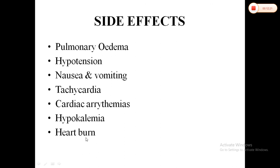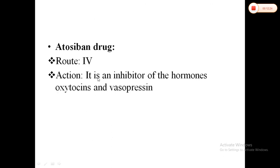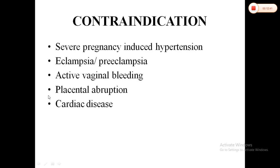Side effects of isoprenaline include hypokalemia and heartburn. Another tocolytic drug is atosiban, given intravenously. Atosiban works by inhibiting oxytocin and vasopressin to suppress uterine contractions. Contraindications include severe pregnancy-induced hypertension, eclampsia, preeclampsia, active vaginal bleeding, and placental abruption.